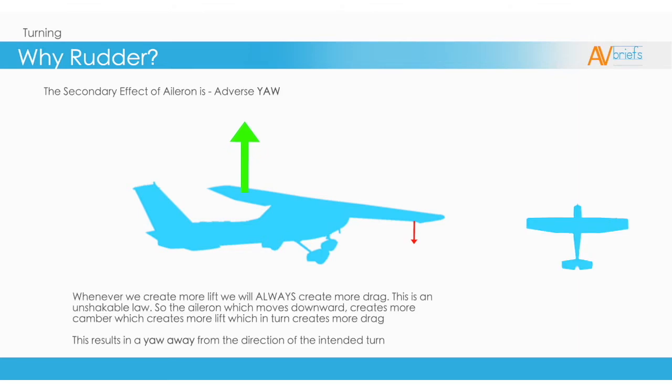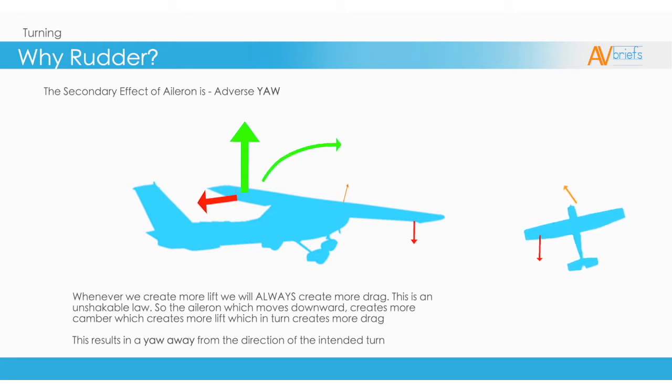This is an unshakable law. The aileron which moves downward creates more camber, which creates more lift, which in turn creates more drag. This results in a yaw away from the direction of the intended turn.